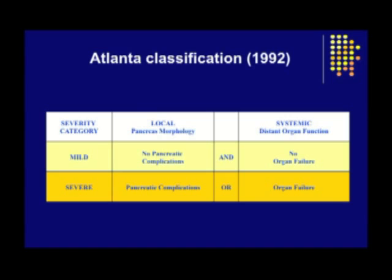These findings give very strong support to the call for revision of the current international classification of acute pancreatitis. As you know, the Atlanta classification defines two categories of severity — mild and severe pancreatitis — and assesses only the presence or absence of organ failure and presence or absence of any local complication. It is now recognized that the duration of organ failure is an important determinant of outcome, in particular that persistent organ failure is a more important determinant of mortality than transient organ failure.